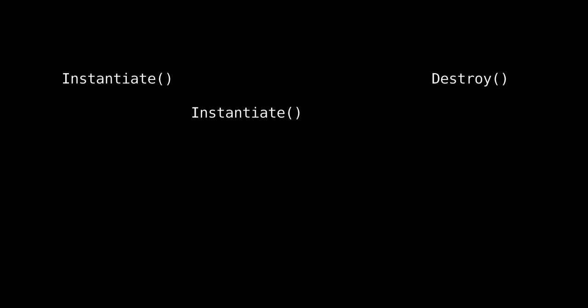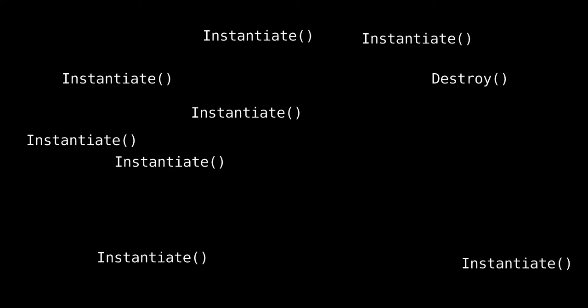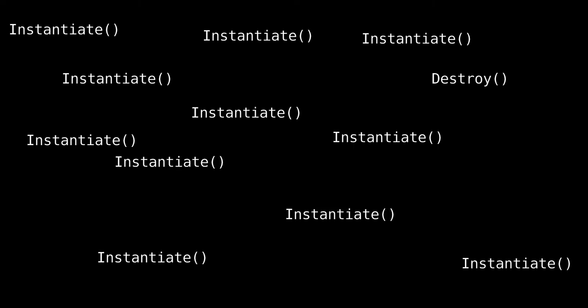You're probably familiar with the instantiate and destroy methods used to add and remove game objects in Unity. In general they're well optimized and only have a small impact on performance. But what would happen if you're firing a machine gun at endless waves of enemies? You might be making hundreds of calls to instantiate objects, and on top of that you need to destroy everything eventually. The insignificant cost of instantiating and destroying objects is starting to add up and slow down your game.